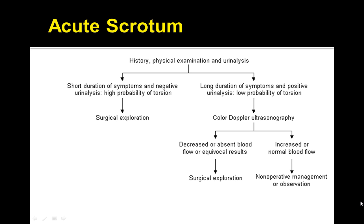You want to look at the duration — that's key. Is it an acute process? If so, it's more urgent and you want to look for surgical exploration as your option. Short duration, negative urinalysis, and a high probability of torsion should lead you to treating the patient with a surgical exploration.